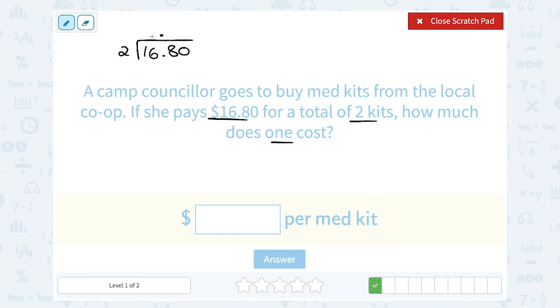Two goes into 16 eight times. Two times eight gives us 16. And that's going to leave me zero.